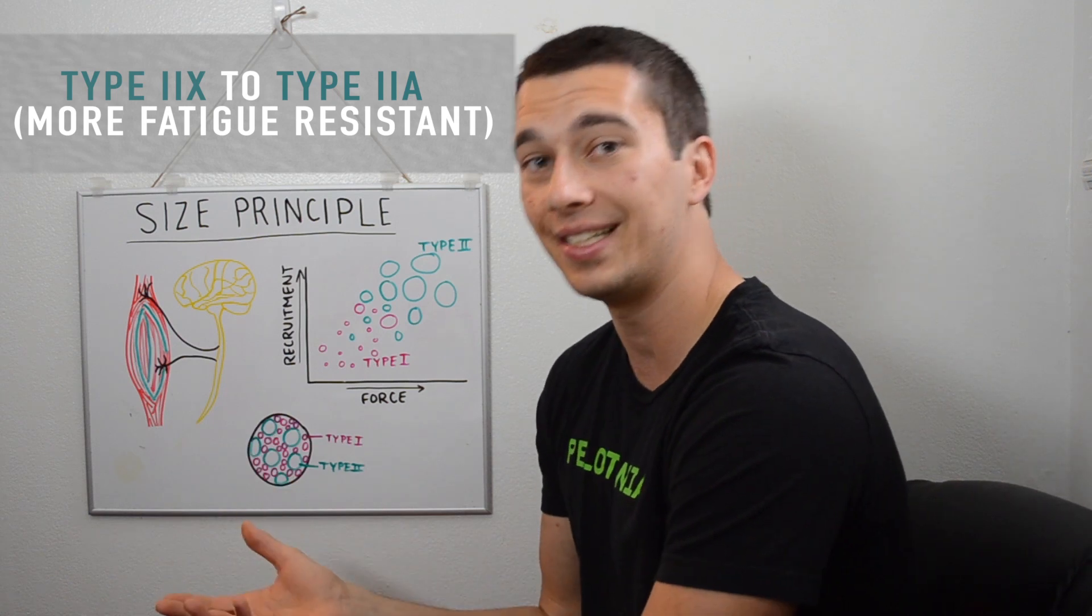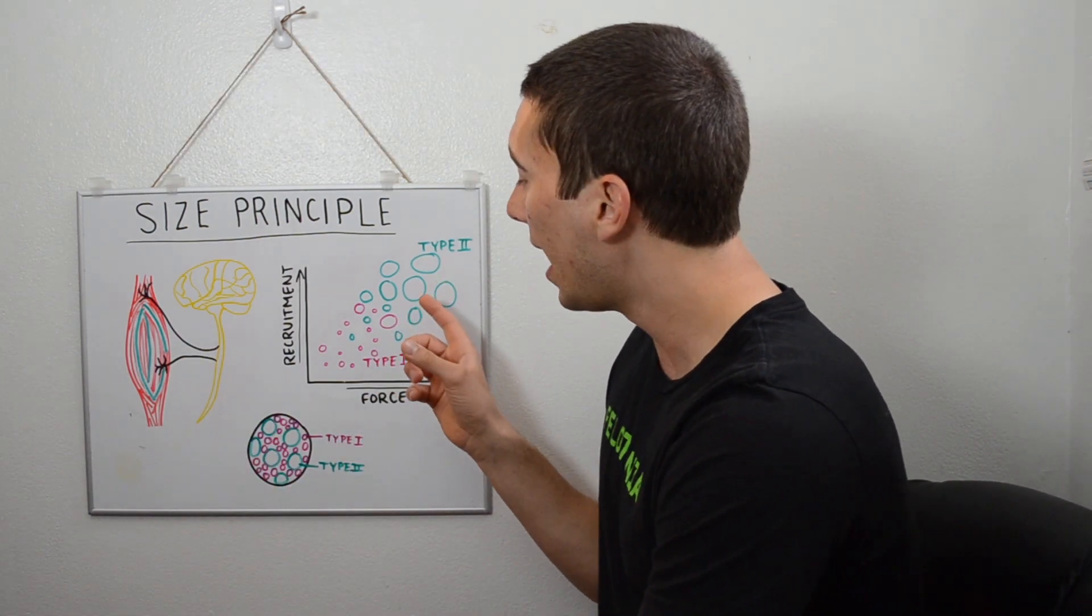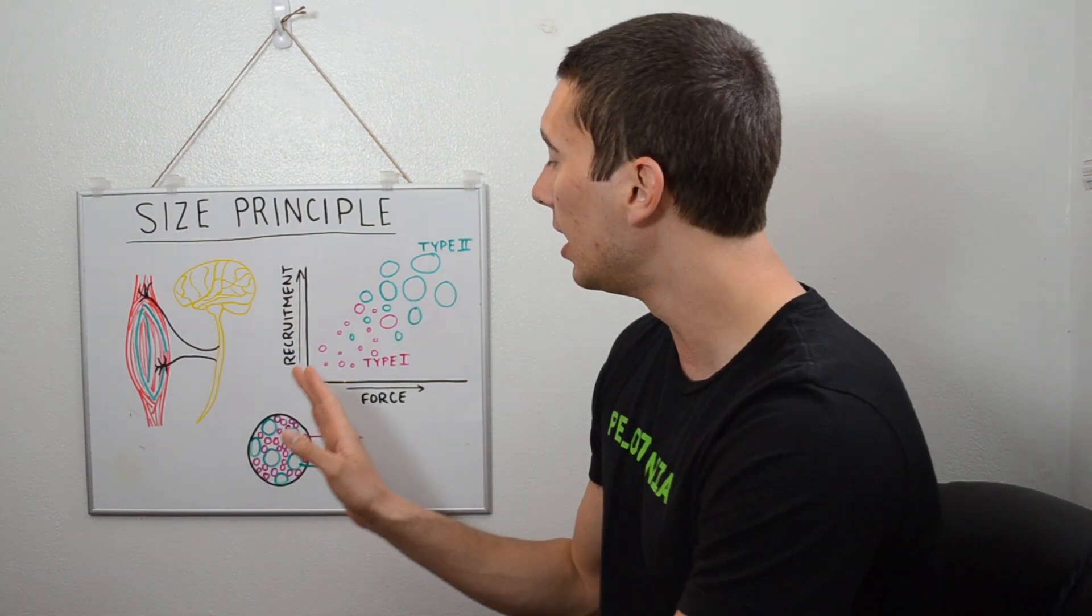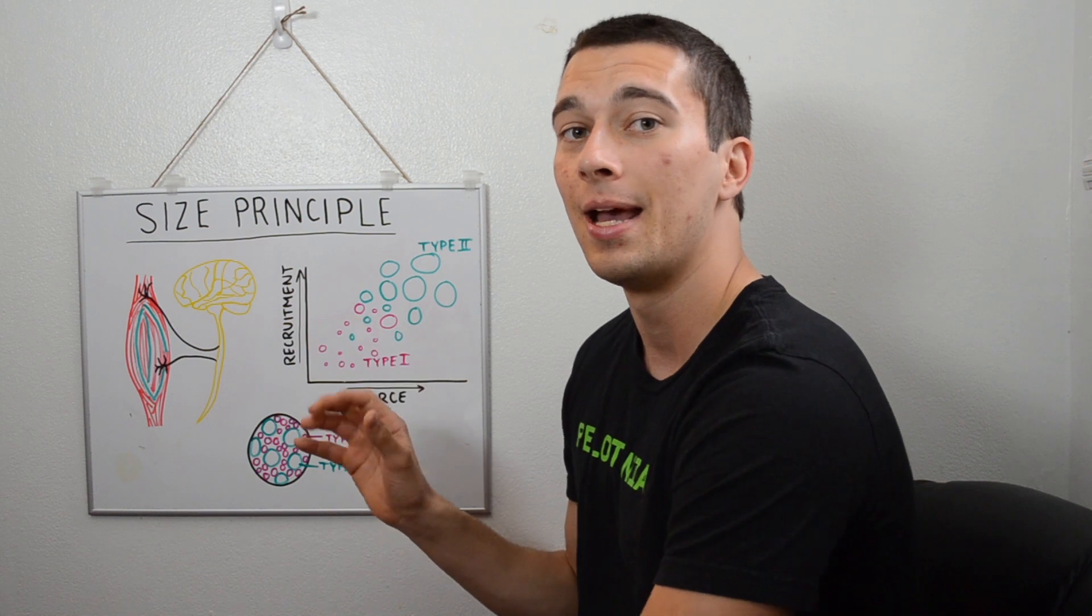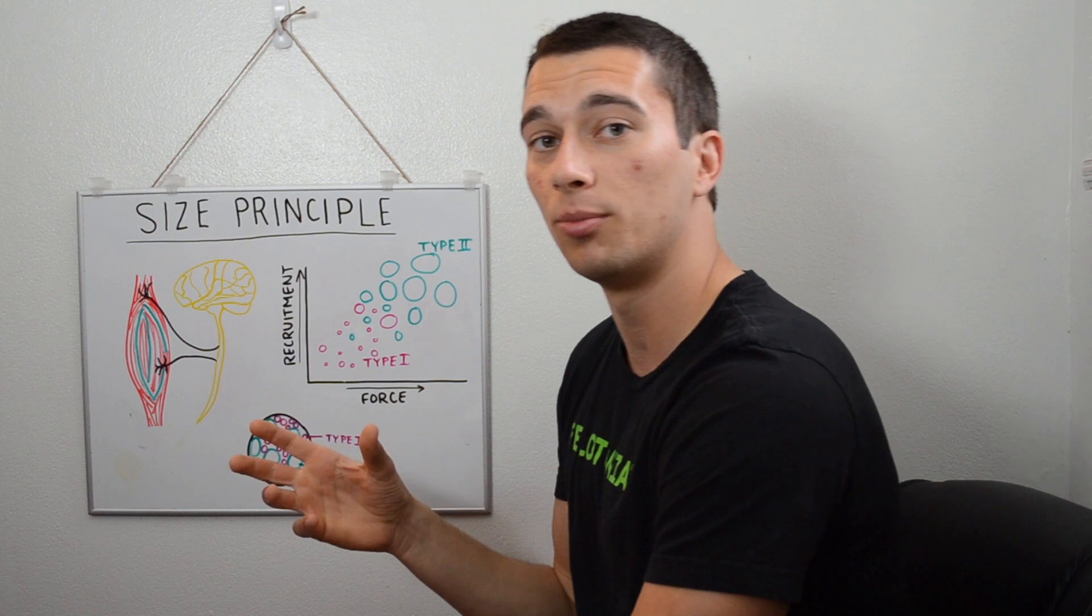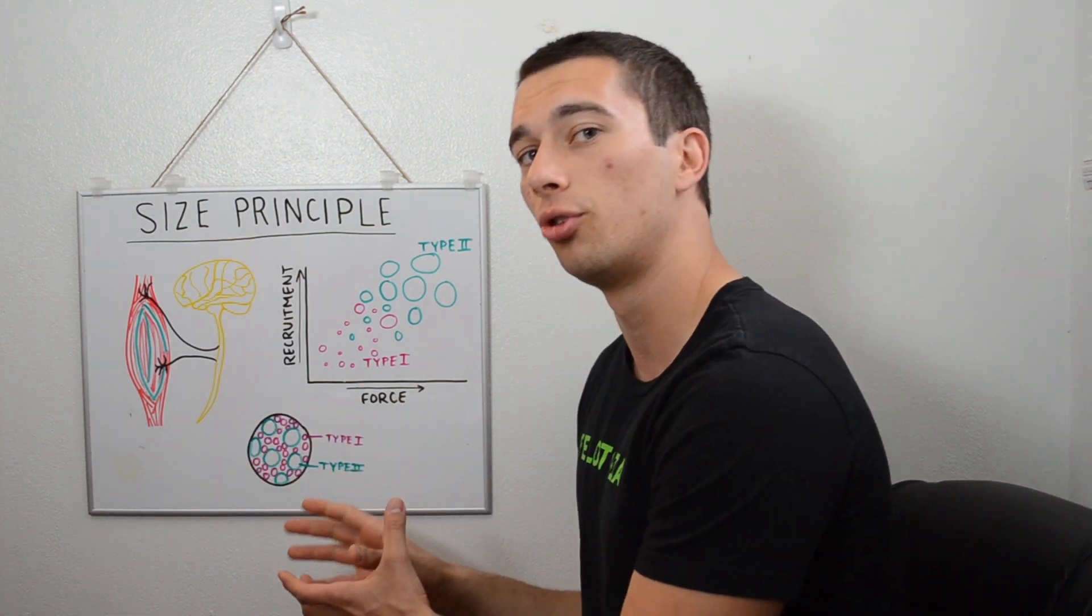So as we do training, even high threshold training, resistance training or aerobic training, we start to make our muscle fibers act more like that type 2a intermediary fiber where it produces high force, high recruitment, but it also is fatigue resistant. This is kind of the mid-range, that optimal zone for high functioning athletic muscle fibers.